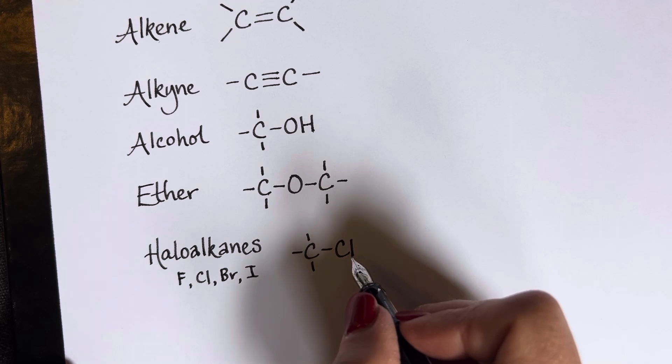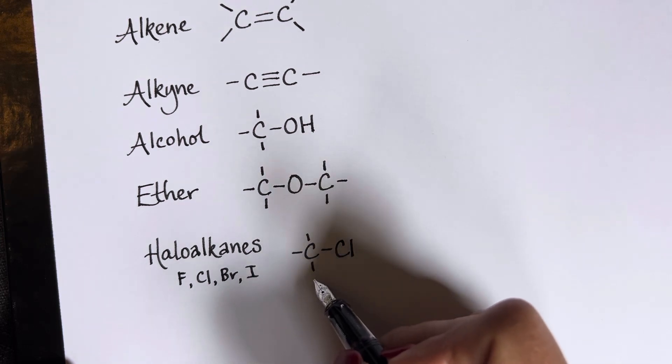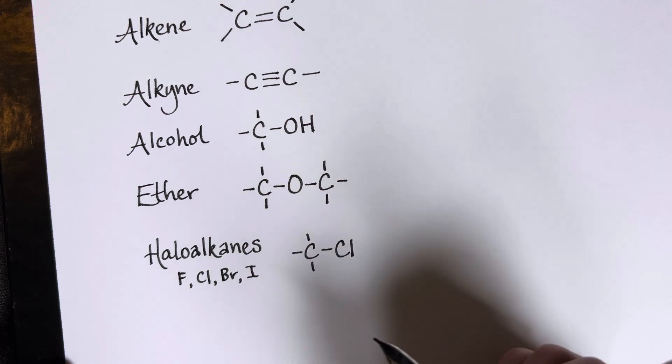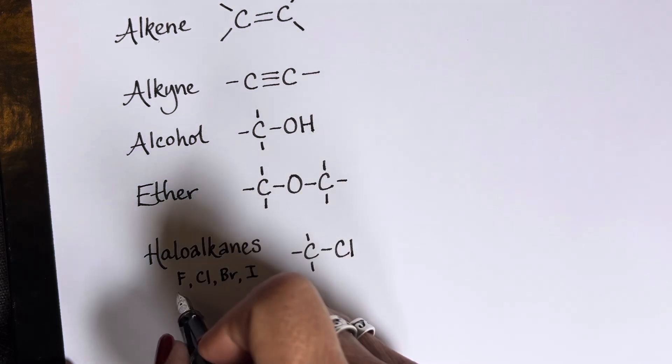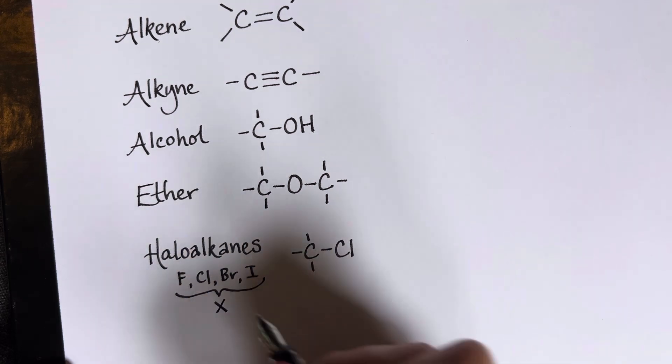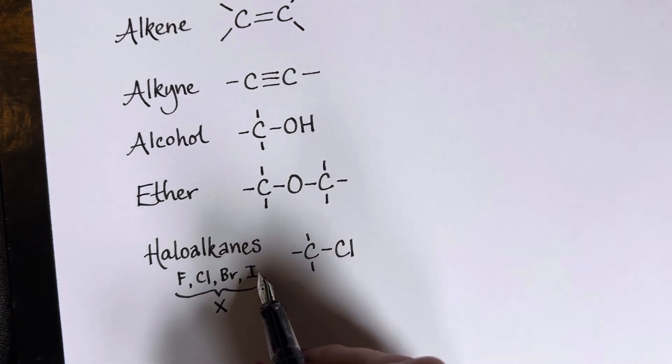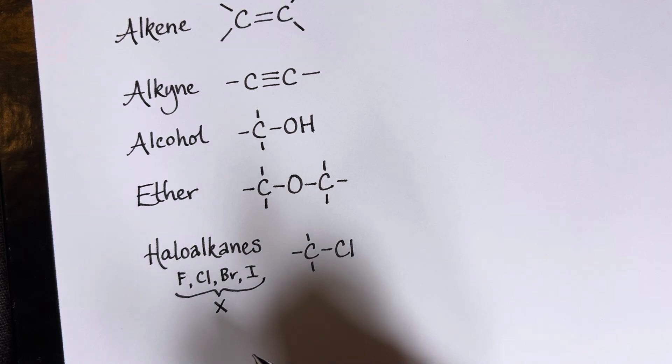So for example, if these were all hydrogens, this would be chloromethane. And by the way, oftentimes, generically, these are referred to as X for shorthand. Just a generic way of showing that it's a halide.